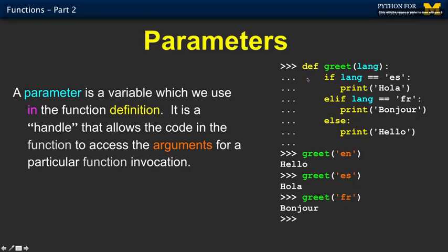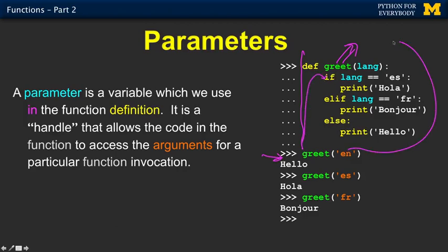The def statement accomplishes nothing on its own — it doesn't run any code, but it creates this function called greet and indicates to Python we expect one parameter. Then I call greet with 'en' — Python remembers to come back, fires up to the function, and lang is an alias for 'en'. Lang is not 'es', lang is not 'fr', so the else code runs. Out comes hello, and then we return to where we left off.